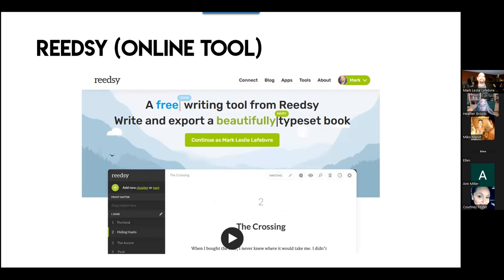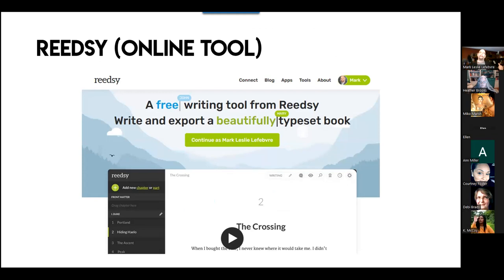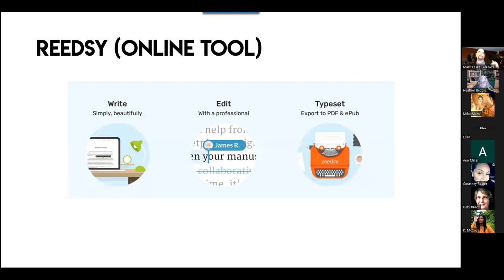For a free online tool, very similar to Atticus but out for many more years — though probably not as robust — is Readsie, via Readsie.com. There's an online editing tool. Like Atticus, you can write right in the tool. You can also use it for collaboration with an editor, where you can see comments and track changes similar to Word, and even see edits in real time if you're both in the document at the same time.